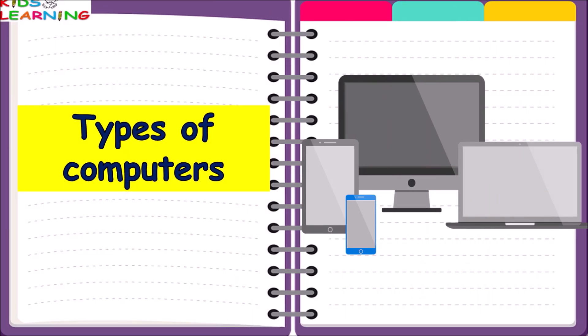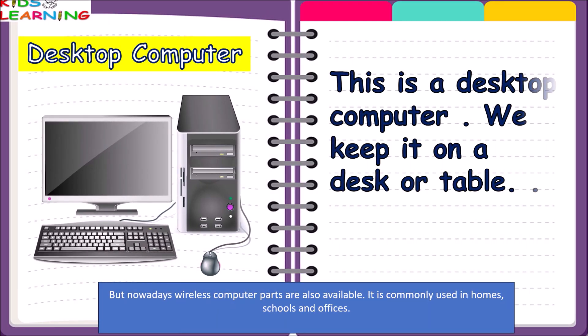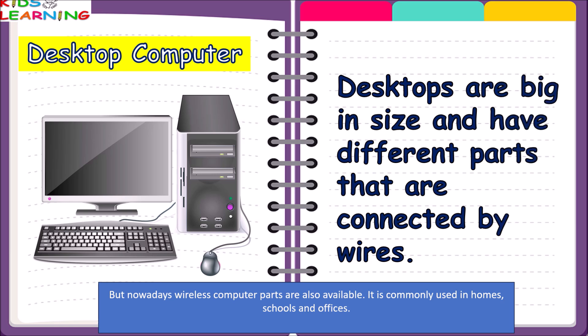Types of computers. Desktop computer — this is a desktop computer. We keep it on a desk or table. Desktops are big in size and have different parts that are connected by wires, but nowadays wireless computer parts are also available. It is commonly used in homes, schools, and offices.